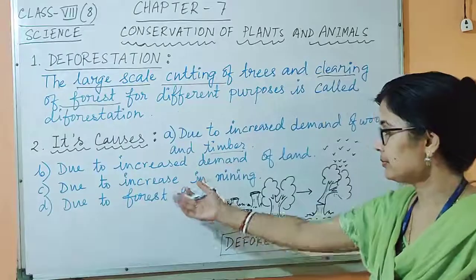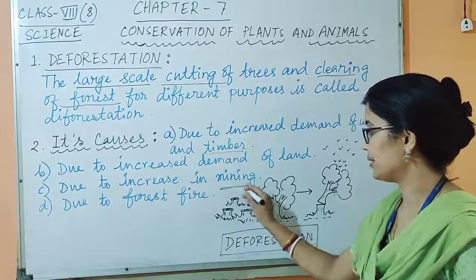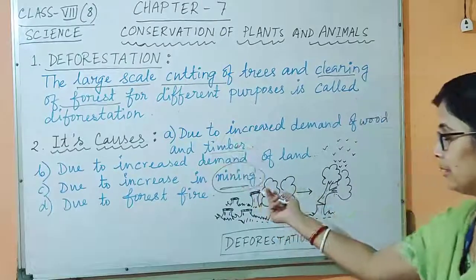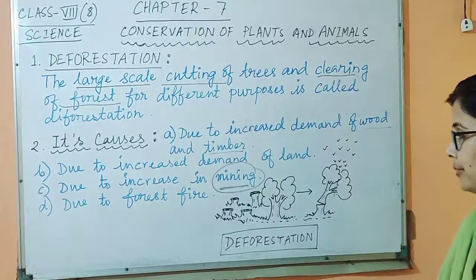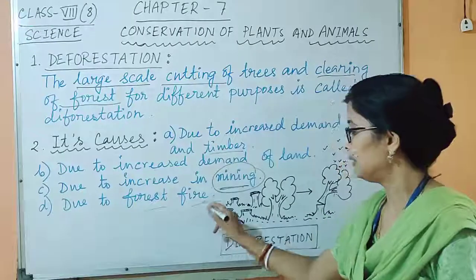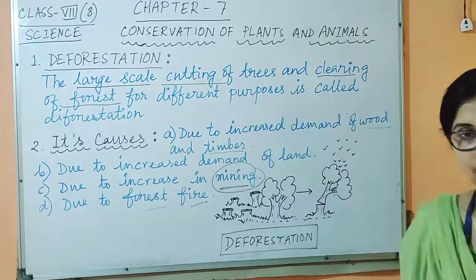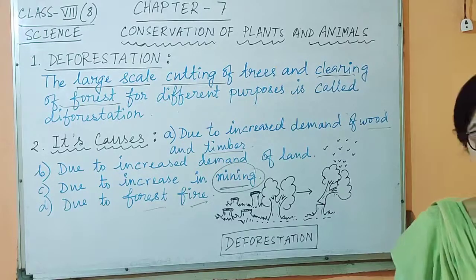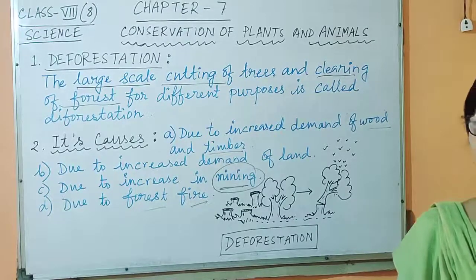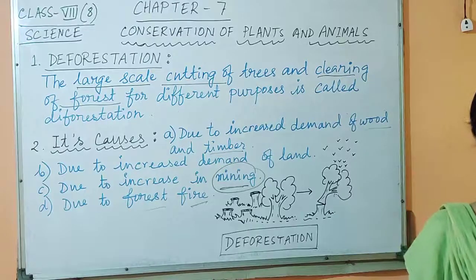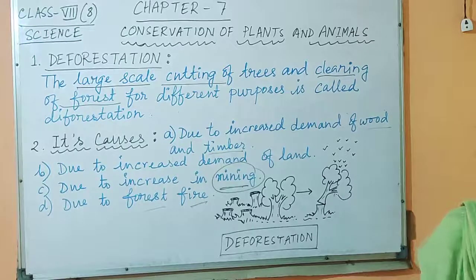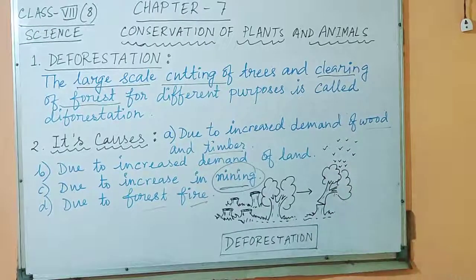Next, trees are also cut down due to the process of mining, which is a very important process. And finally, there is the natural process — that is forest fire. Sometimes naturally a huge area of forest catches fire. You have heard about the great forest fire in the Amazon, which caused destruction and devastation in the forest. So please write down the different causes of deforestation.